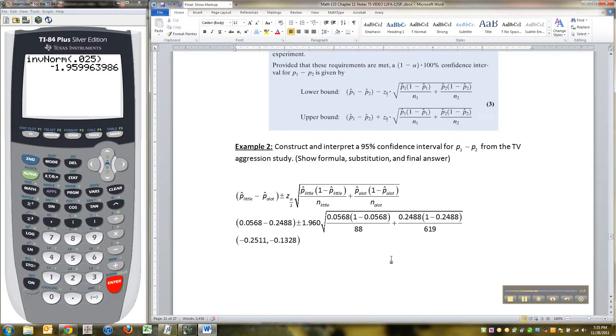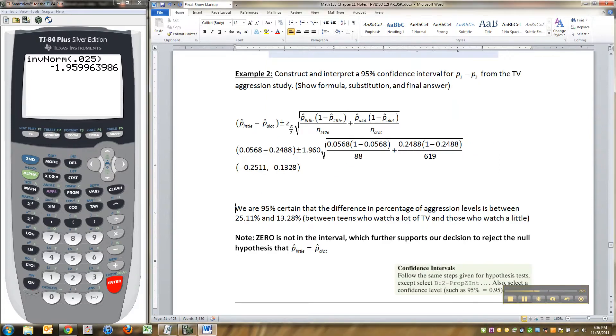All right. Now, notice, hopefully you notice, what's not in the interval, right? Here's how to interpret it. We can say we are 95% certain that the difference in percentage of aggression levels is between -25.11 and -13.28%. The negative positive thing doesn't really matter. That's just a factor of which number I put in front. If I had put the a lot in front, then they would have been positive. If I put the little in front, then they're negative. So, it's kind of six in one hand, half a dozen in the other. But notice that 0 is not in the interval.